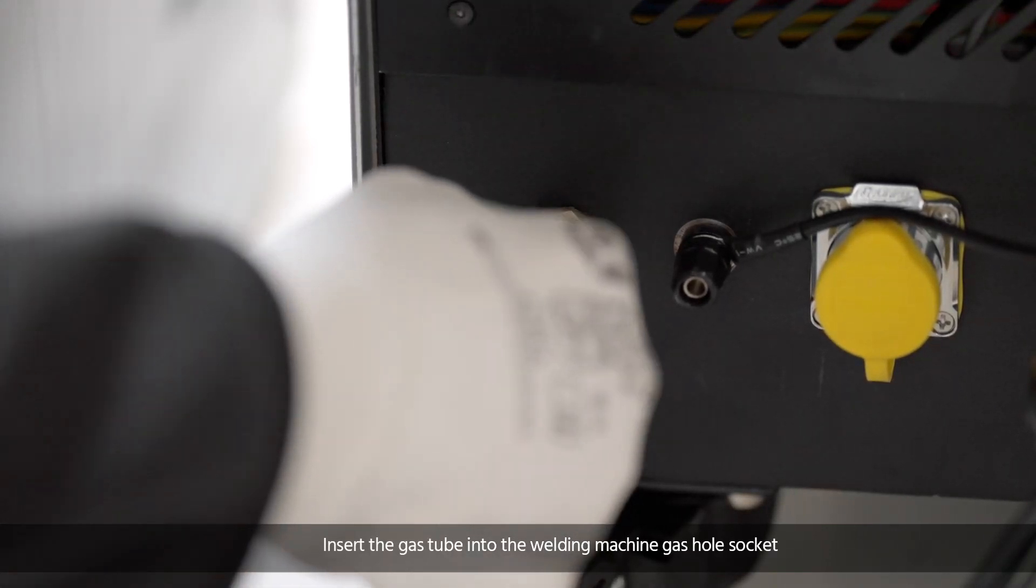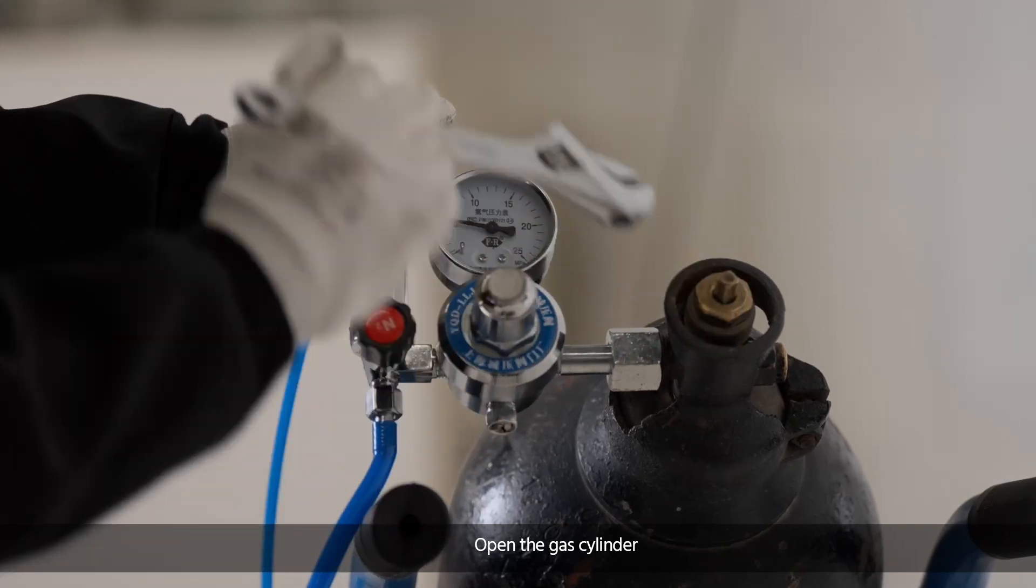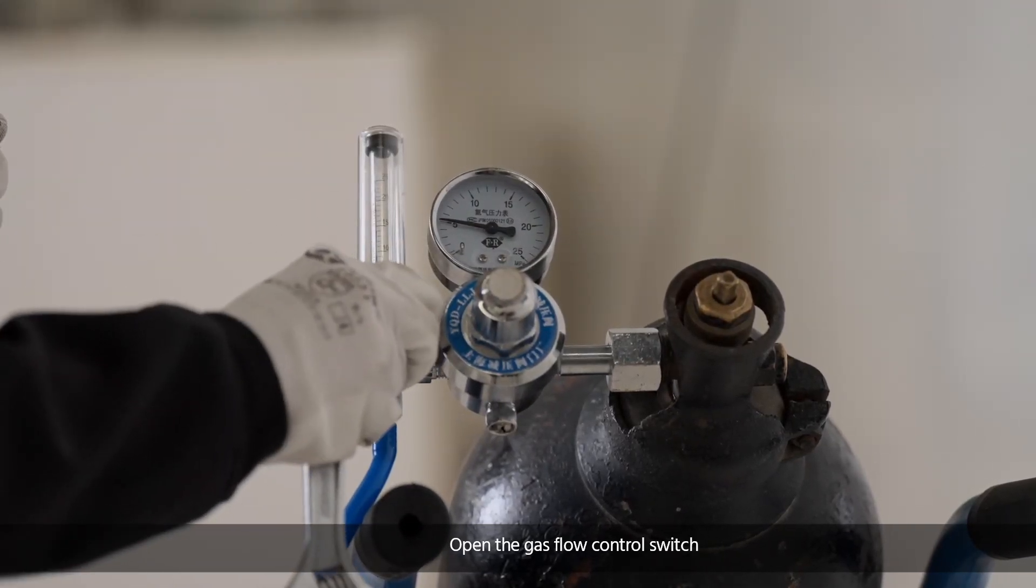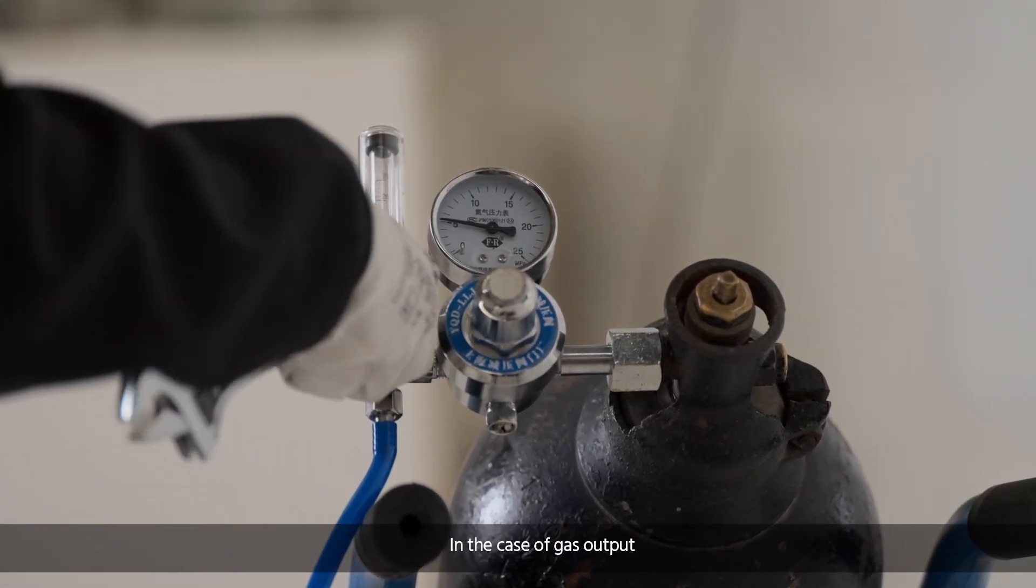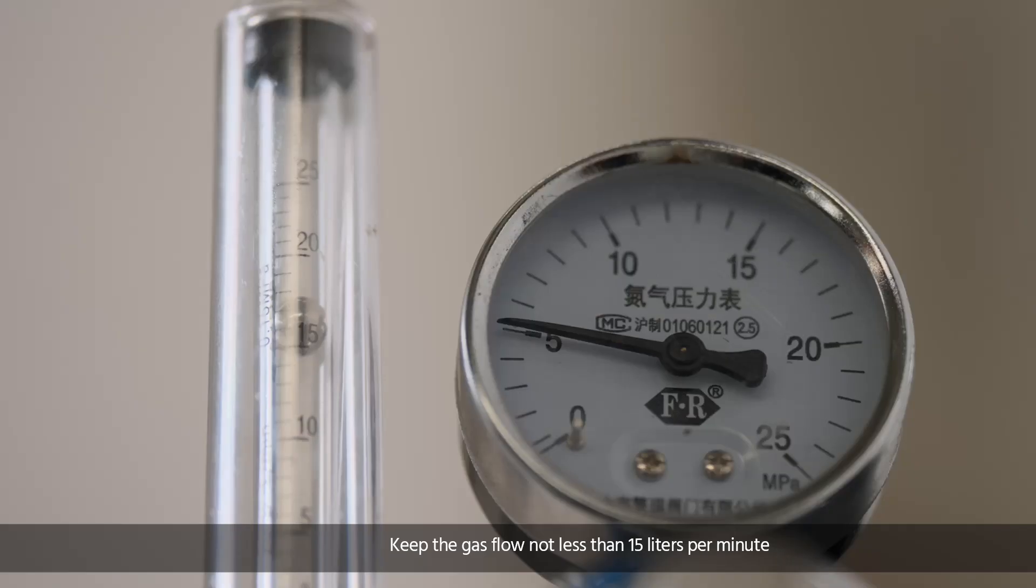Insert the gas tube into the welding machine gas hole socket. Open the gas cylinder and open the gas flow control switch. In the case of gas output, keep the gas flow not less than 15 liters per minute.